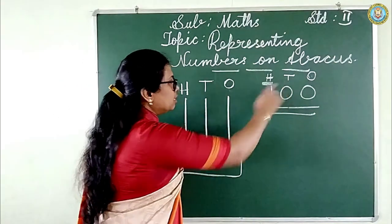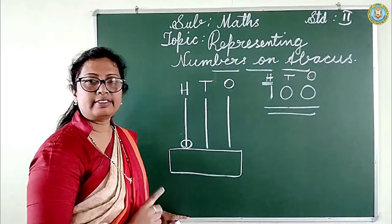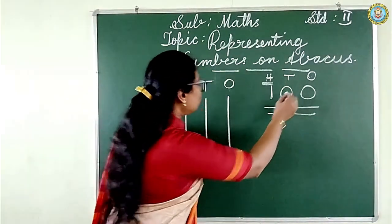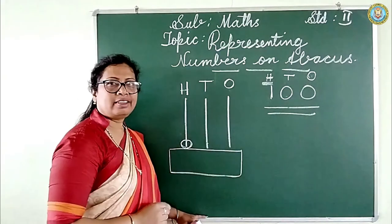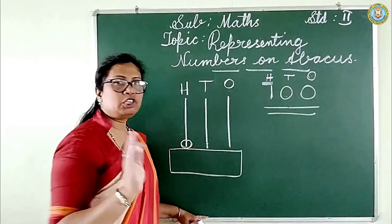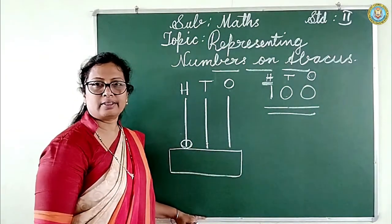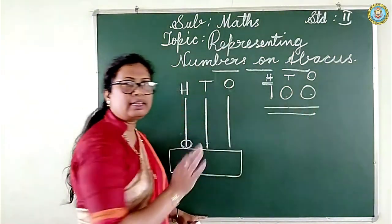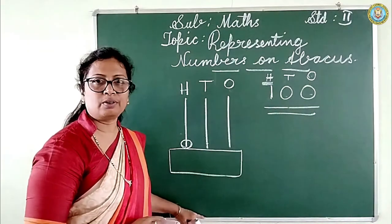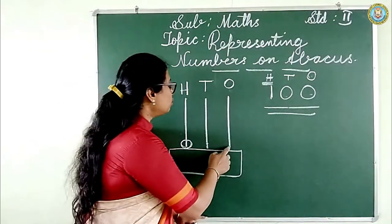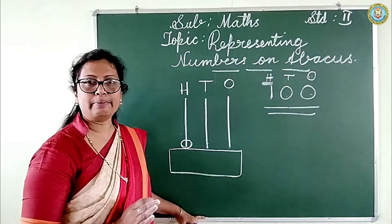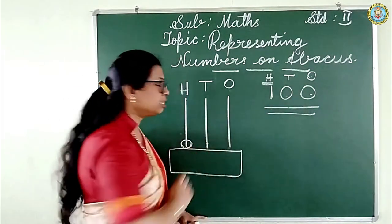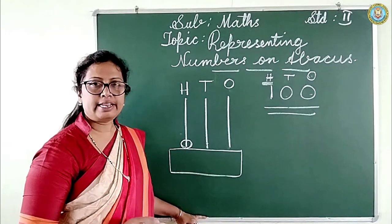Look at the tens place — is there any number? There is no number, so no bead. Look at the ones place — is there any number? Zero only. So we should not put any bead there either.